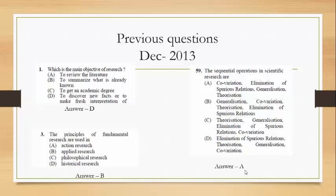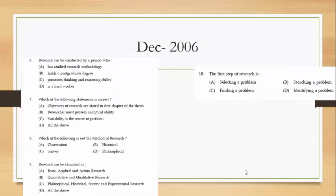Moving on. These are four questions from December 2006. Research can be conducted by a person. Answer is C. Similarly, you can just go through all the questions, validate your answers, if you have come up with the right answers or not.